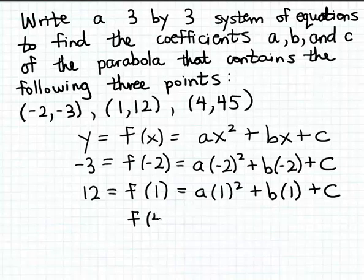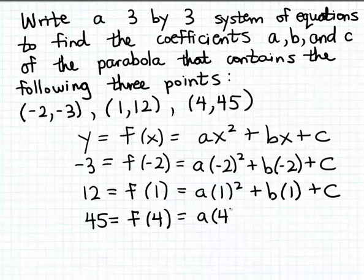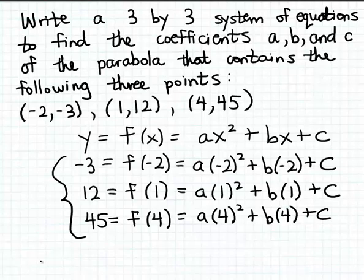Now doing the same with the third point: I substitute 4 for x in my parabola formula. The matching output has to be 45 if this parabola is indeed going to pass through this point. So we get a times 4 squared plus b times 4 plus c, equal to 45. Here are the three equations we can solve for the three unknowns a, b, and c — this is our system of equations.